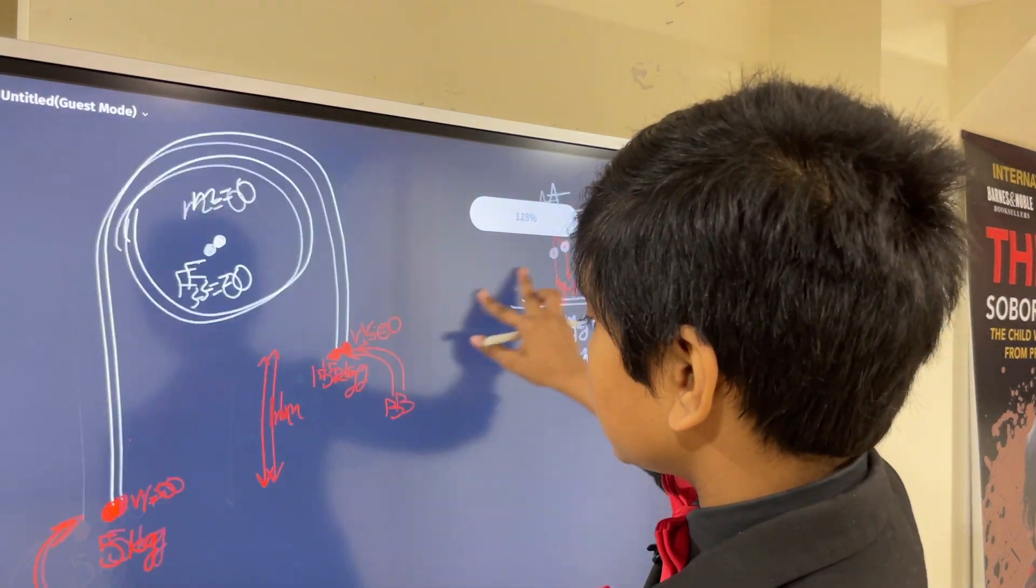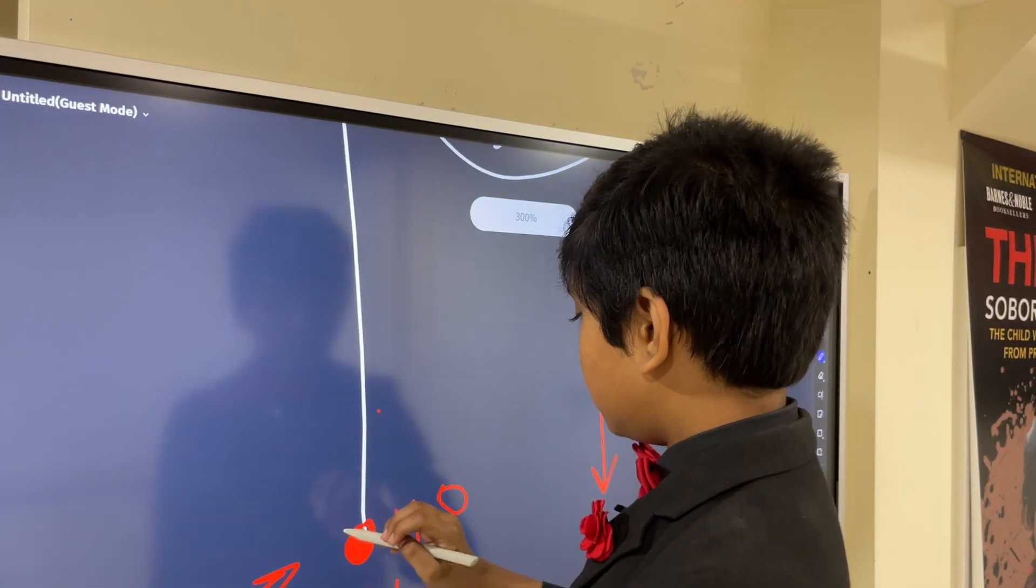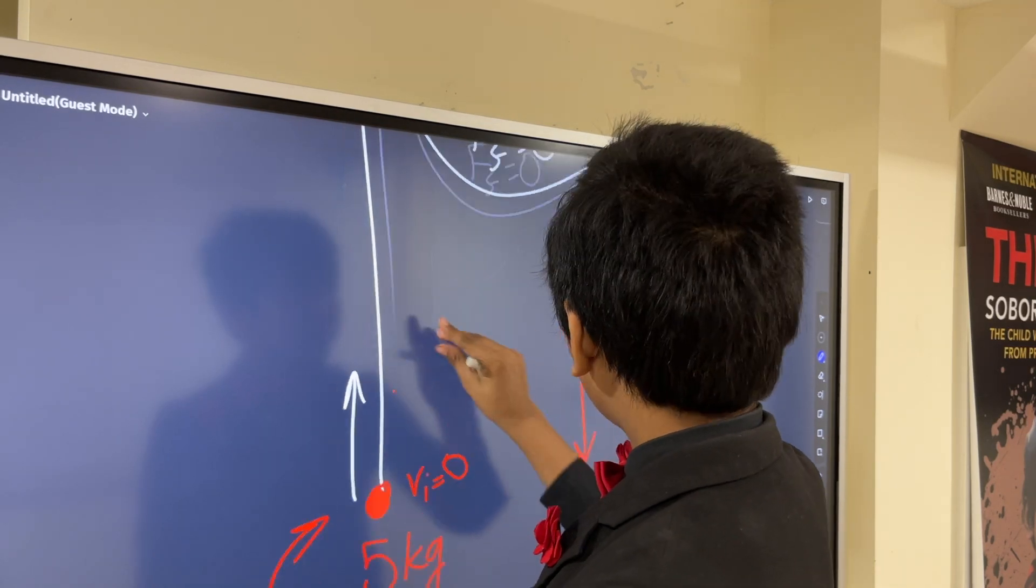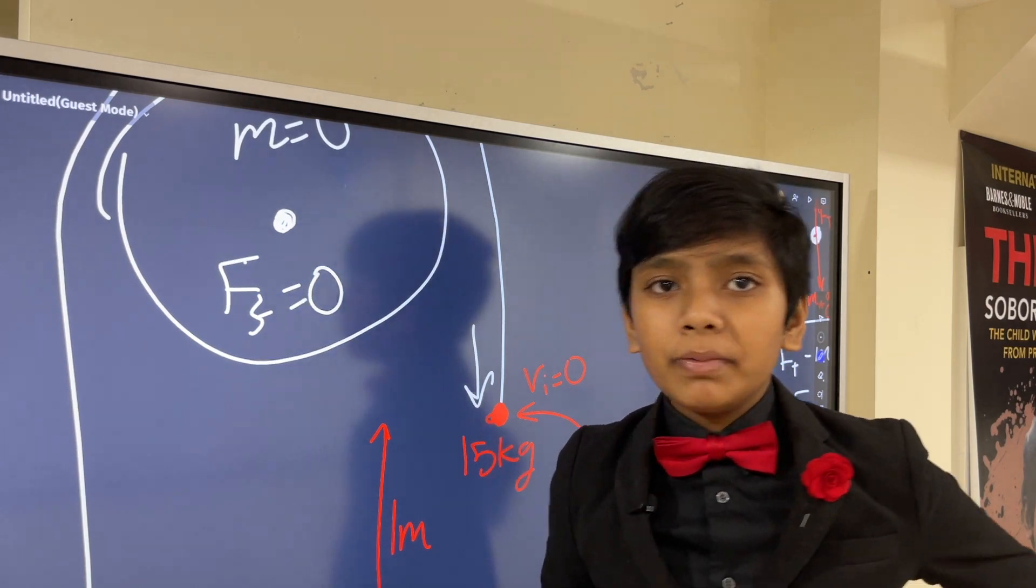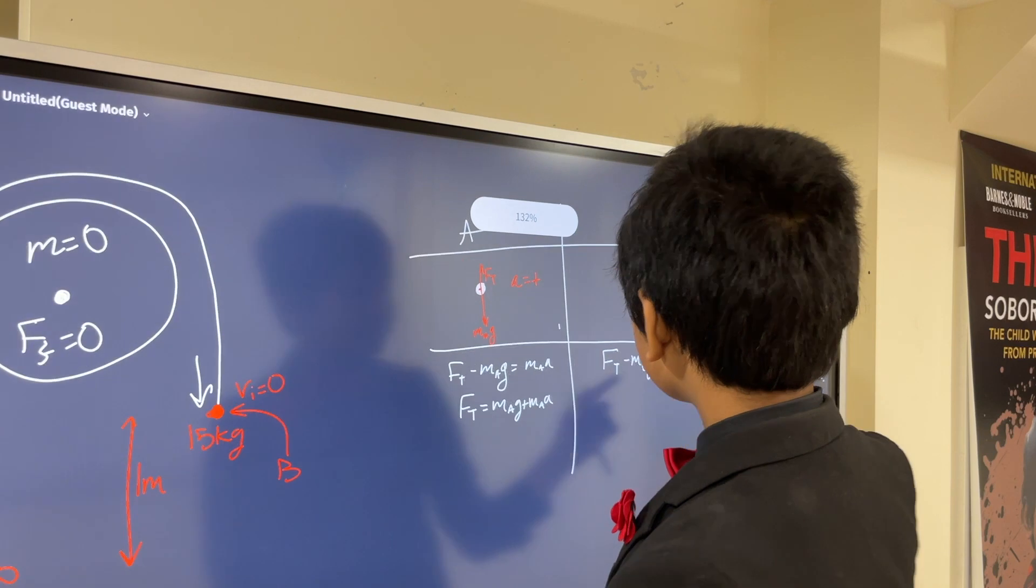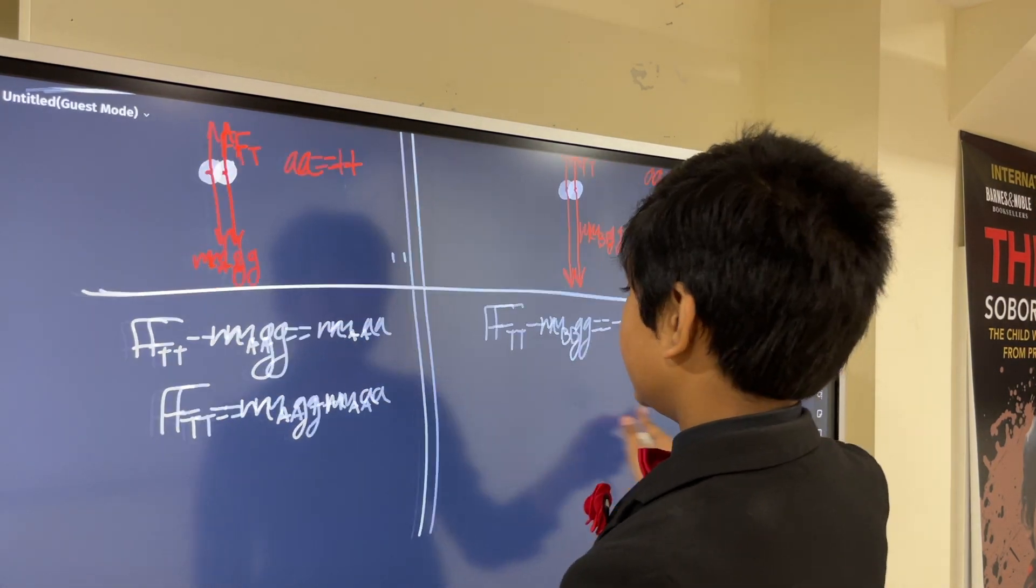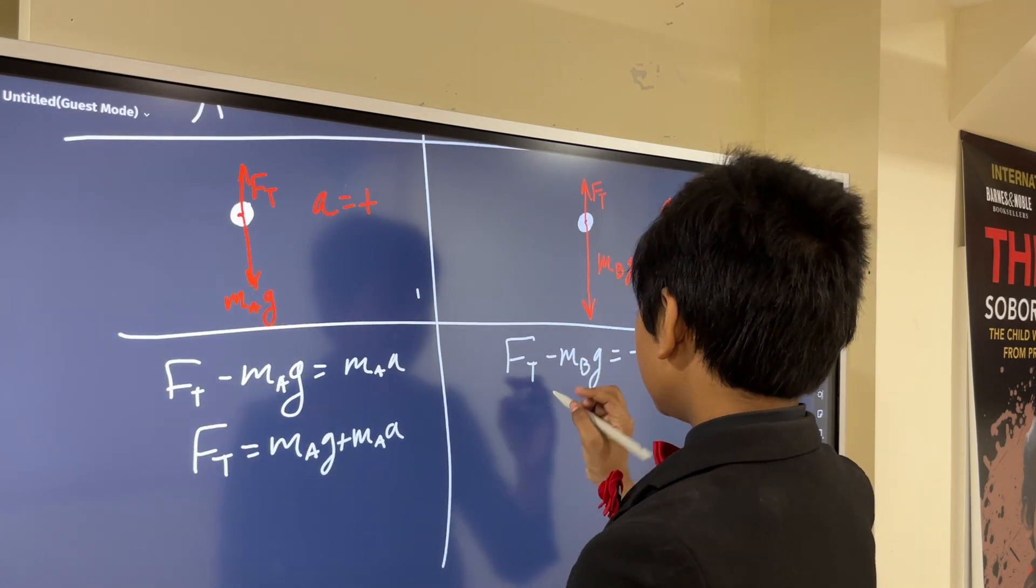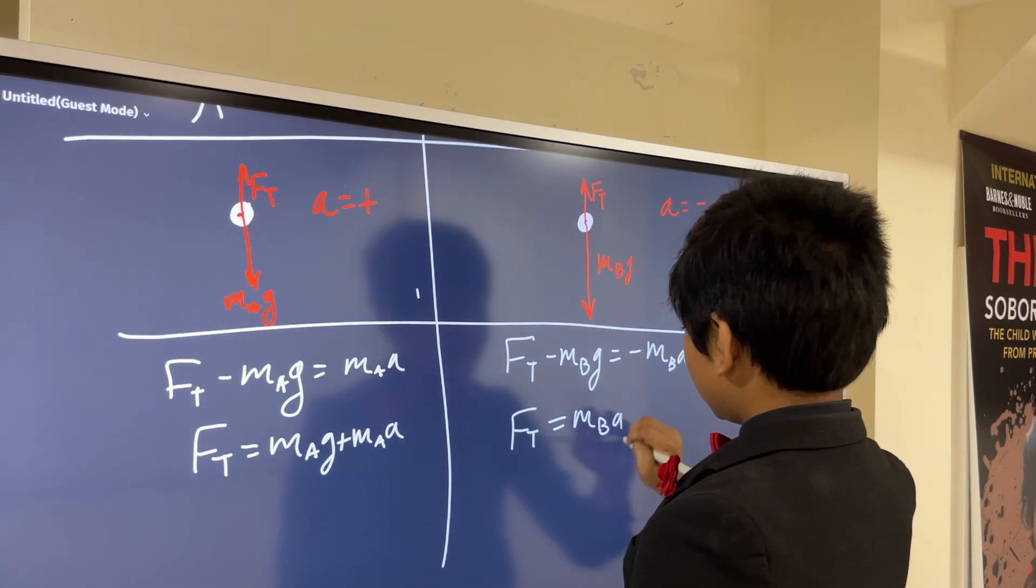And remember, the acceleration is going to be the same for both of these guys, because the velocity that this one is going to go up has to be the same velocity this one is going to go down. The rope can't magically grow or shrink. So, that means that this A is the exact same as this A. Just keep that in mind. So, FT is MBG minus MBA.